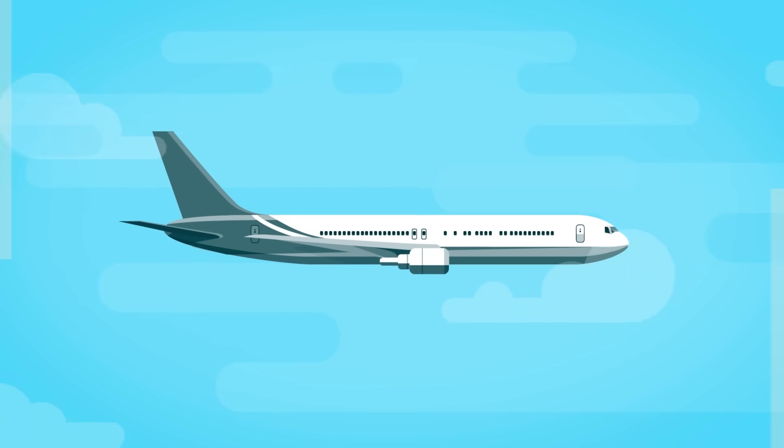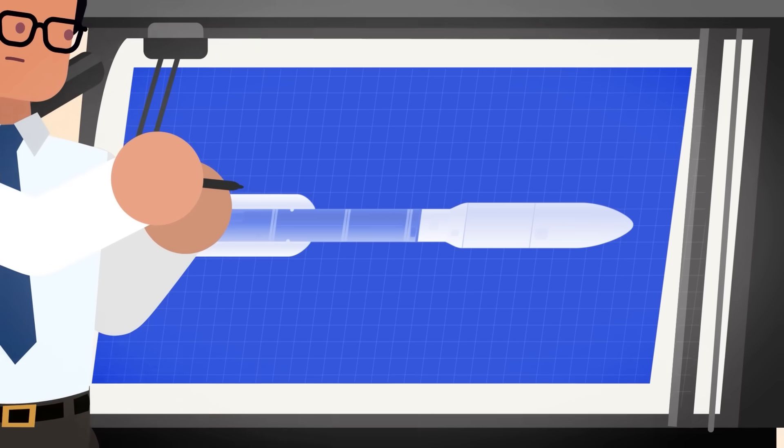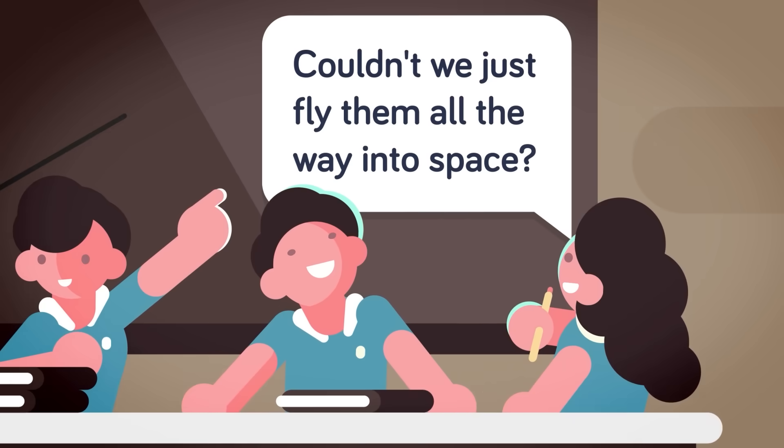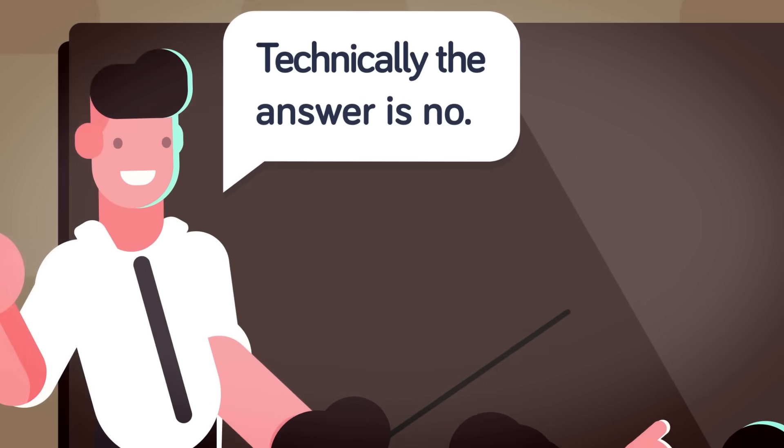But as engineers design new types of spacecraft, some might wonder why do they go to all that trouble. After all, planes can fly pretty high. Couldn't we just fly them a little bit higher, say, all the way to space? Technically, the answer is no. We absolutely could not. But why? That answer is a little bit more complicated.